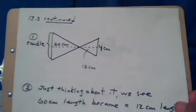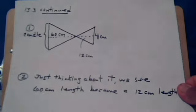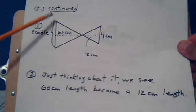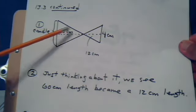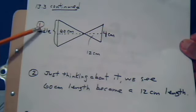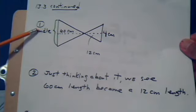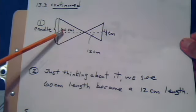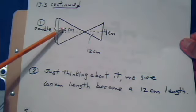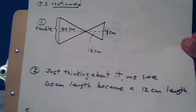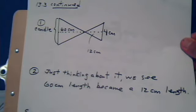So just keep that part of the figure that you need. The rest is a distraction. So here's the candle: this is 60 centimeters, this is 12 centimeters, and this is 4 centimeters. We would like to know the candle size. Just thinking about it, we see that the 60 going from the bigger triangle to the smaller became a 12. So ask yourself, what number did I multiply by?